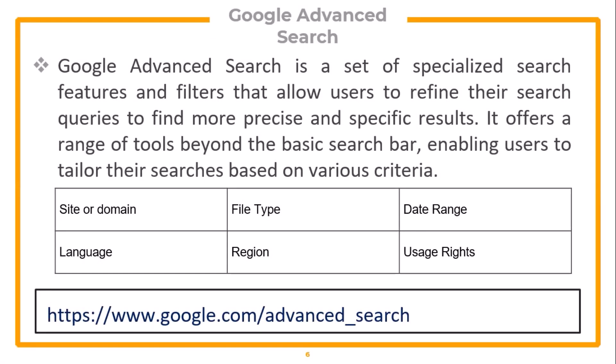In addition to Google Dorks, Google also has a feature called Google Advanced Search. It is a set of specialized search features and filters that allow users to refine their search queries to find more precise and specific results. It offers a range of tools beyond the basic search bar, enabling users to tailor their searches based on various criteria. Now let's see the demonstration.